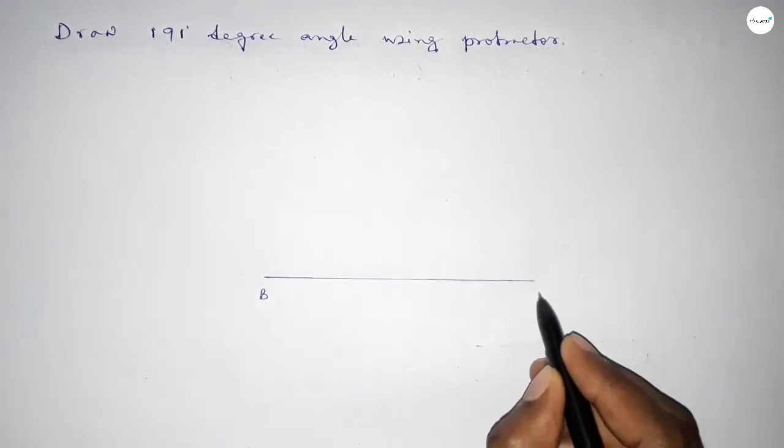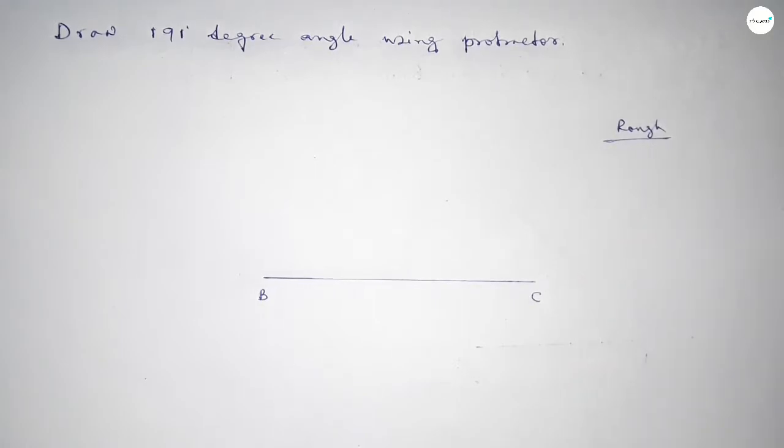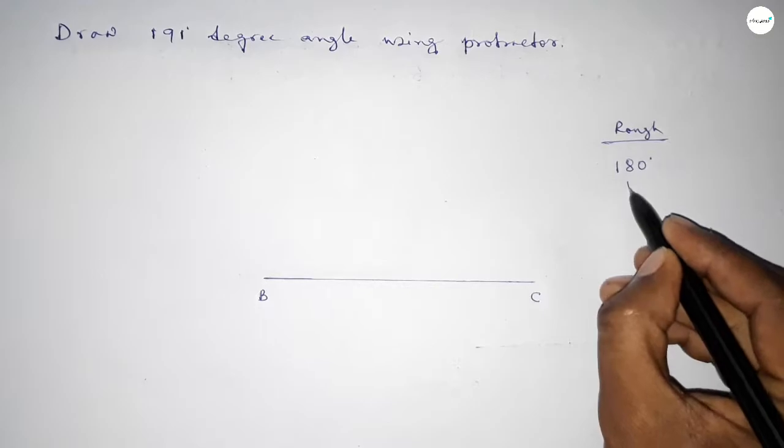Next, taking here point B and here point C. Now roughly discussing here some calculation. So if we add 11 degrees with 180 degrees, then we can get 191 degree angle.